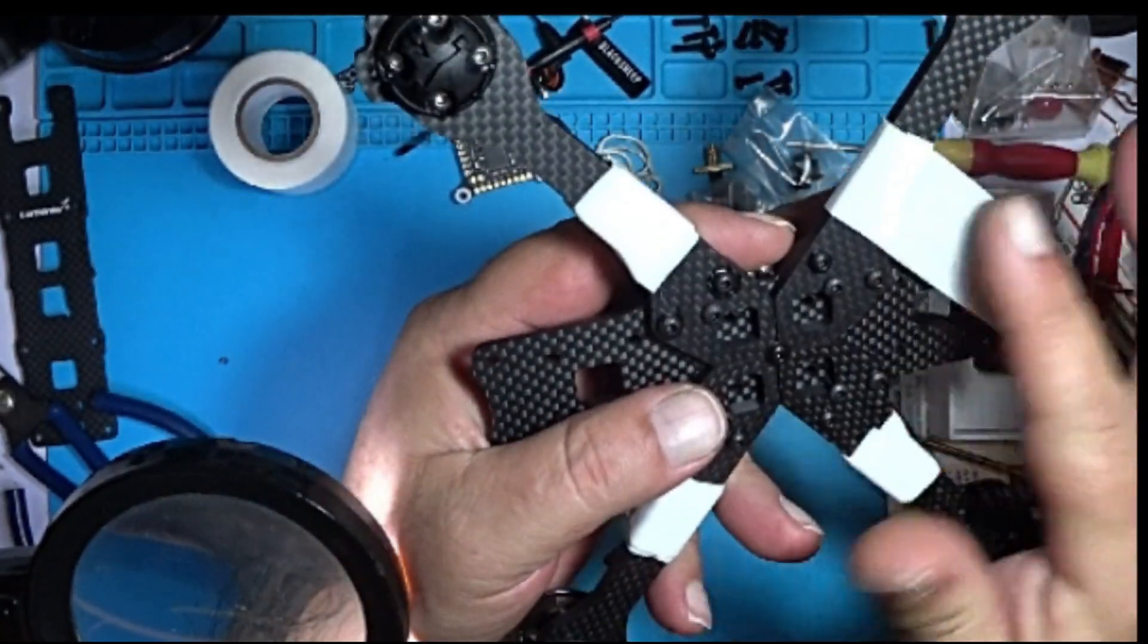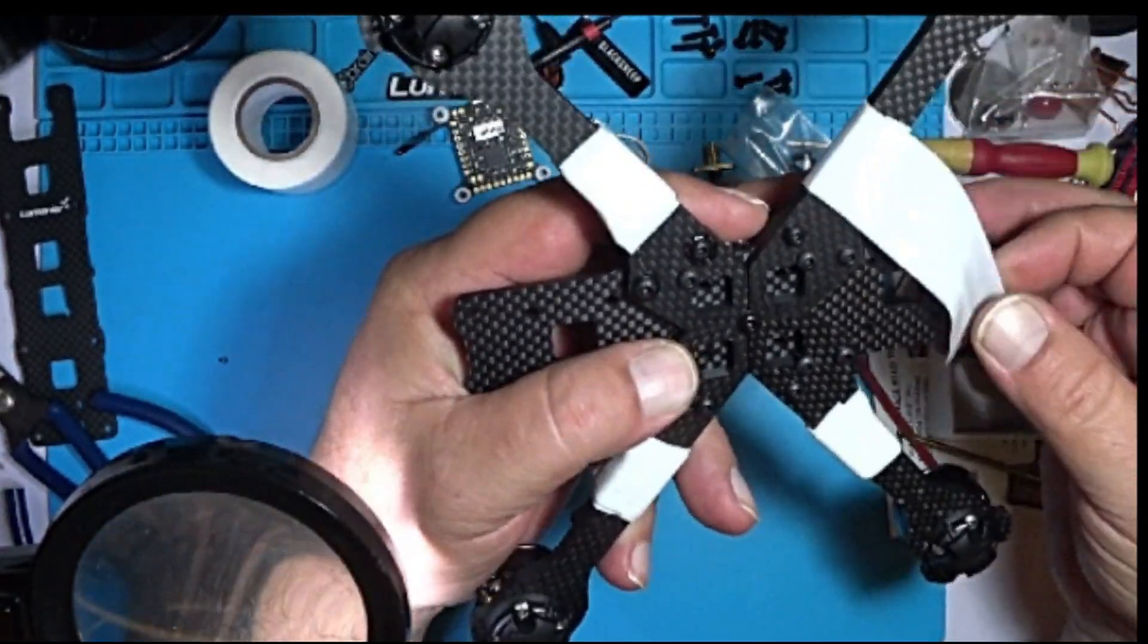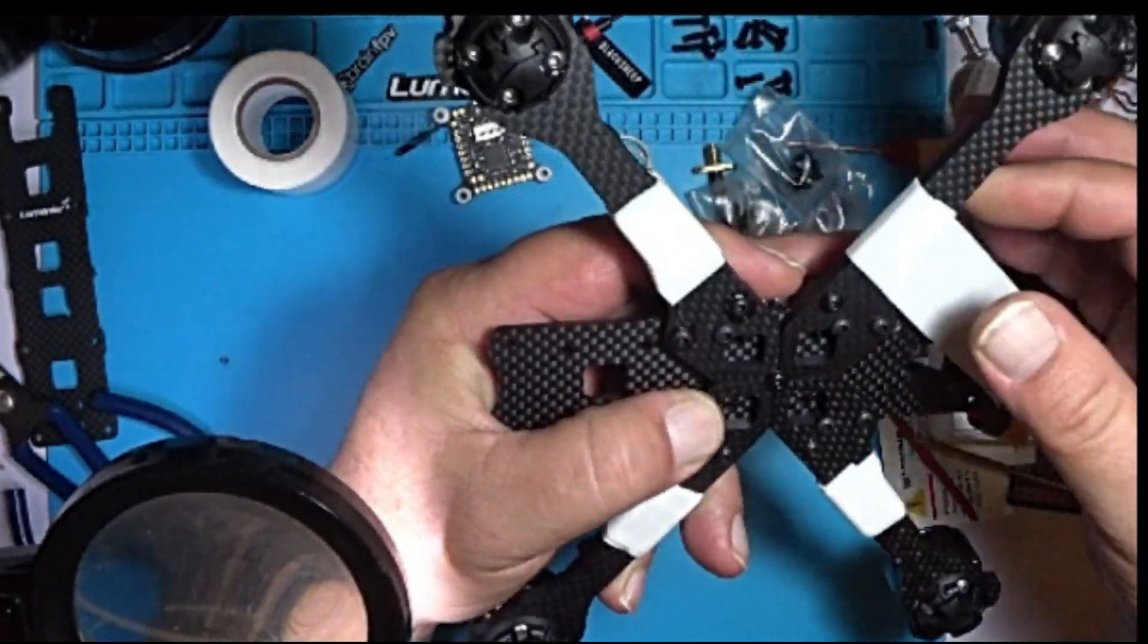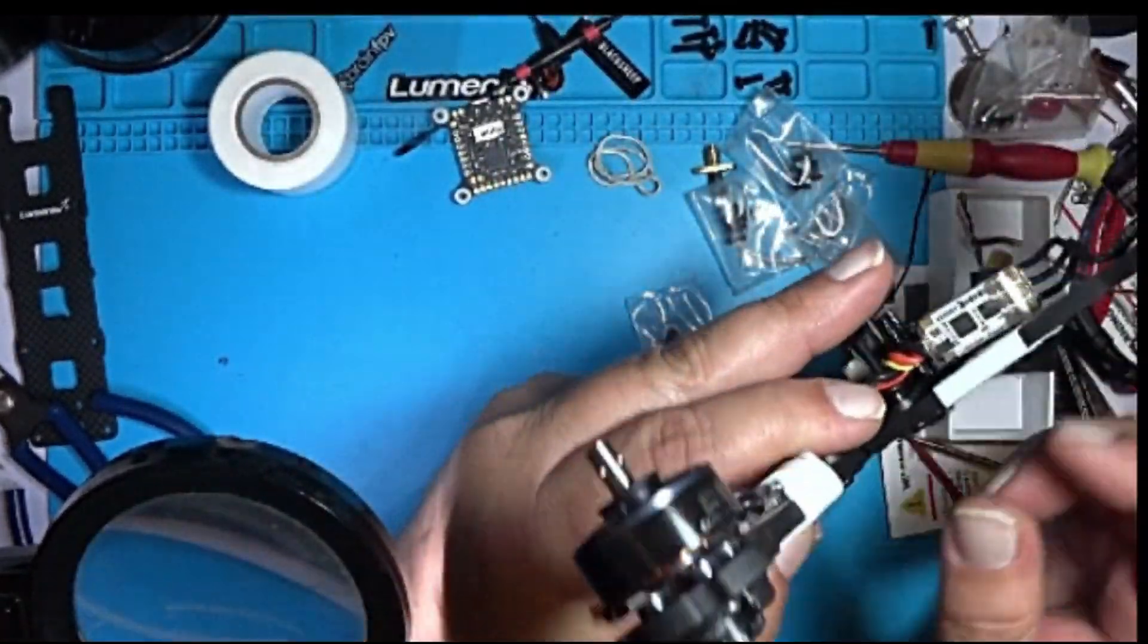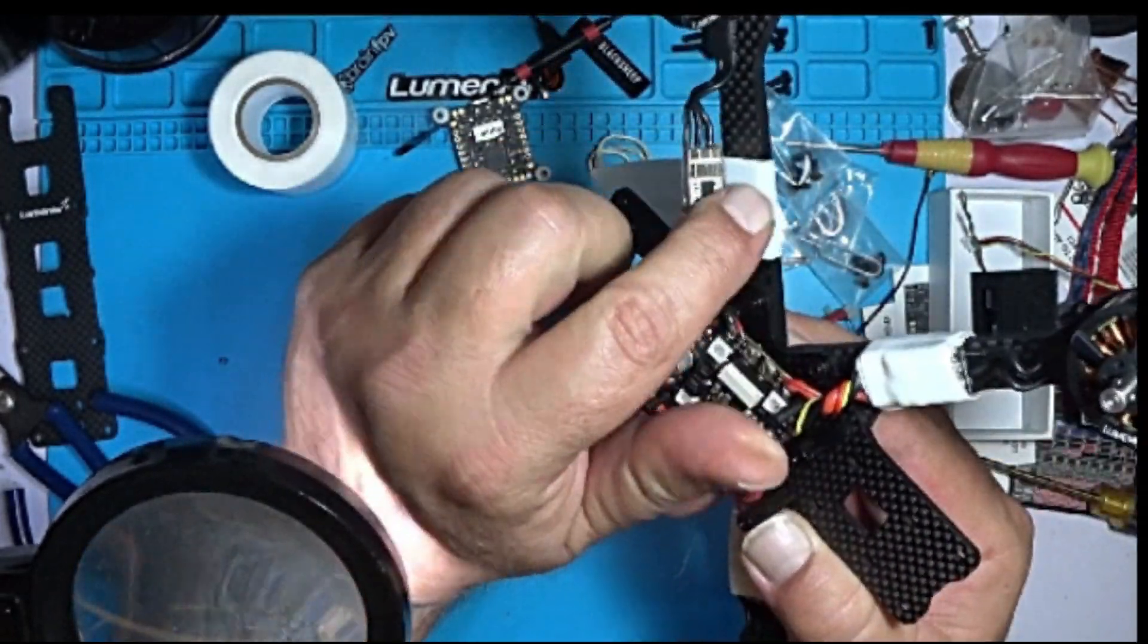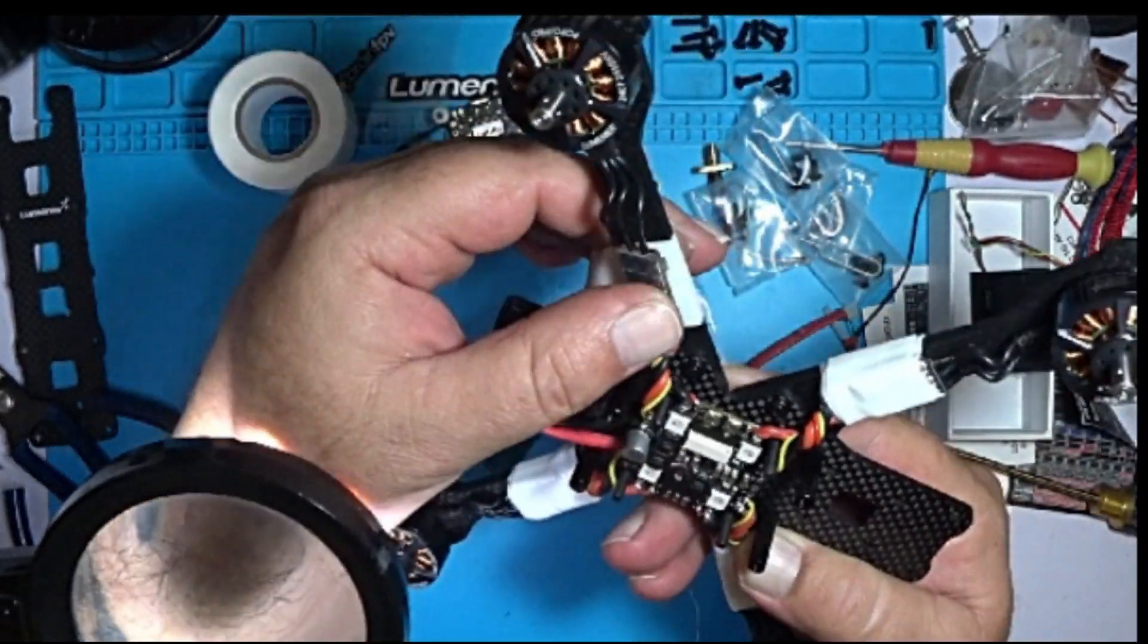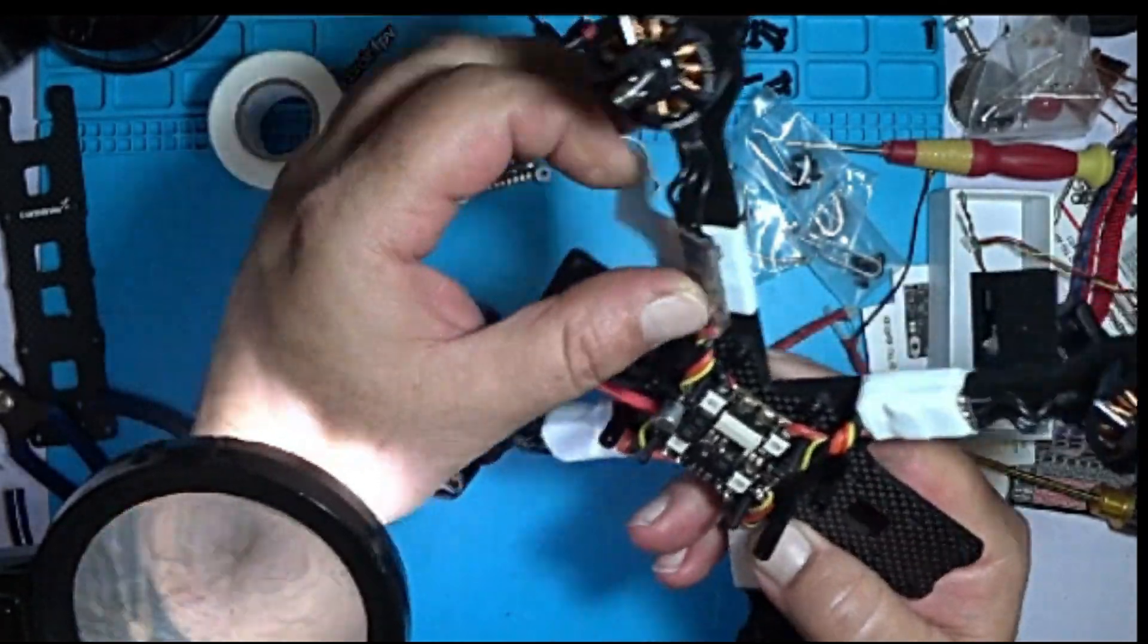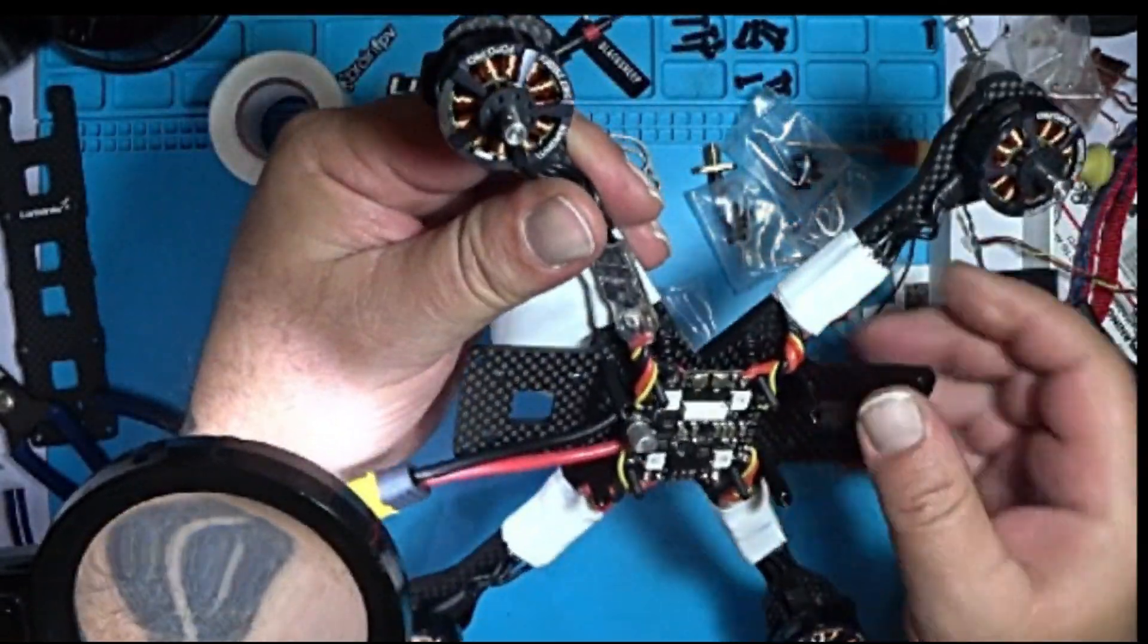As you can see, it sticks to itself and it's very stretchy. Now that I have it around the arm, that's going to provide insulation for my ESC from shorting out on the arm.